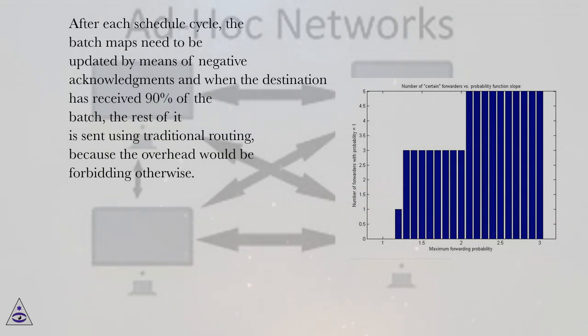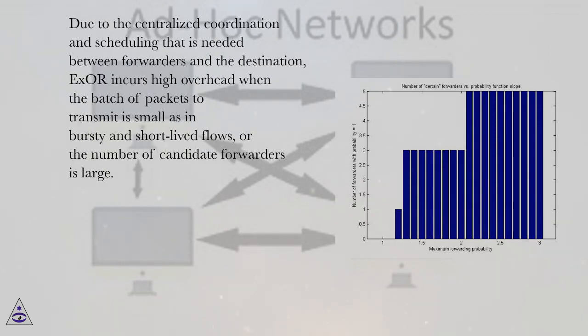After each schedule cycle, the batch maps need to be updated by means of negative acknowledgements and when the destination has received 90% of the batch, the rest of it is sent using traditional routing, because the overhead would be forbidding otherwise. Due to the centralized coordination and scheduling that is needed between forwarders and the destination, ExOR incurs high overhead when the batch of packets to transmit is small as in bursty and short-lived flows, or the number of candidate forwarders is large.